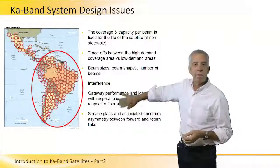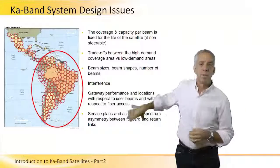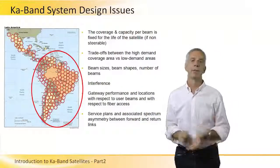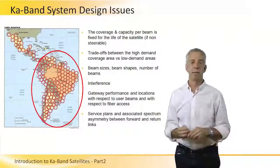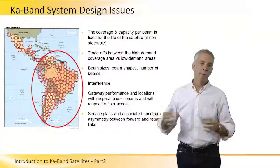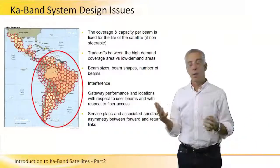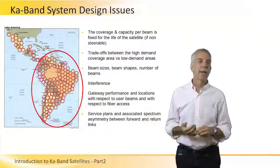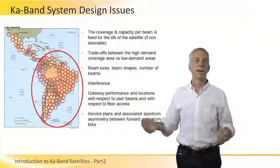There need to be trade-offs between high-population areas and the coverage provided. For example, in South America, you might not put any KA band beams in the middle of the Amazon — you focus beams in high-population areas where demand will be. The operator also has to consider how big the beams will be and how to shape them. Bigger beams cover more geographic area and population, but at the sacrifice of power — less EIRP and G/T — potentially reducing capacity on that beam.